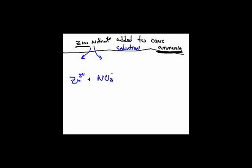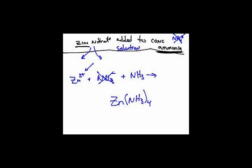Don't confuse ammonia, NH3, with ammonium, NH4⁺ — they are not the same thing; no ligands with ammonium. The nitrate is a spectator ion. Zinc has a charge of two positive, so you double that and you need four ammonias. So the complex ion is Zn(NH₃)₄. Refiguring the charge: zinc is plus two, ammonia has zero charge, so four times zero is zero. The overall charge is plus two.